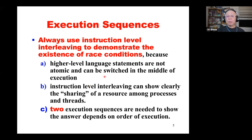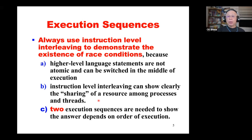Higher-level language statements are not atomic and can be switched in the middle of execution. For example, C++ is translated to load and save instructions — at least three machine instructions — and CPU scheduling could occur anywhere between any two consecutive instructions. Instruction-level interleaving can clearly show the sharing of a resource among processes and threads in a concurrent way.